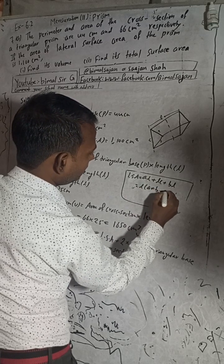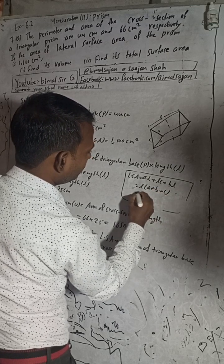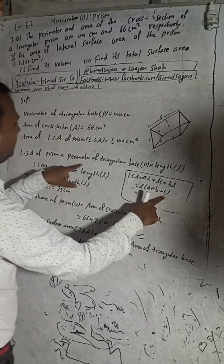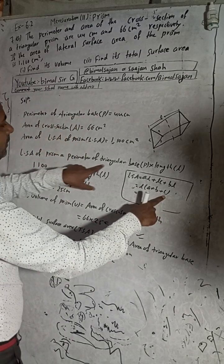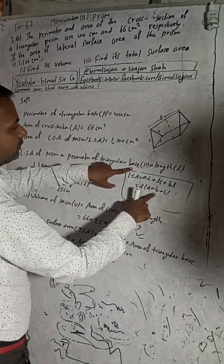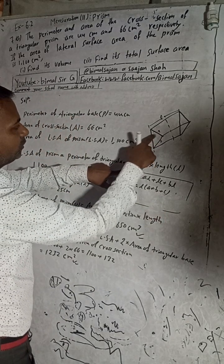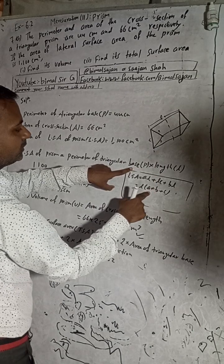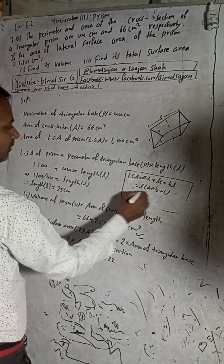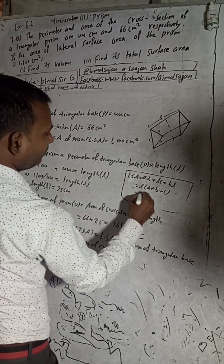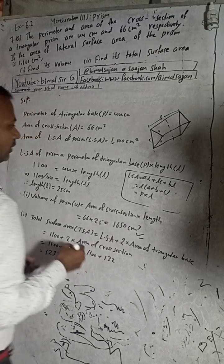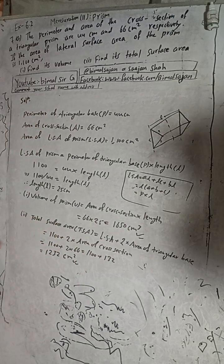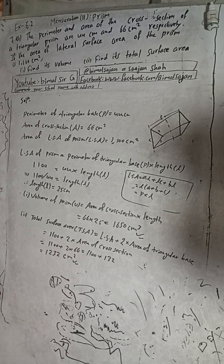The lateral surface area formula comes from: the perimeter of the triangular base (a + b + c) multiplied by the length. So it's simply perimeter into length — that is the formula.